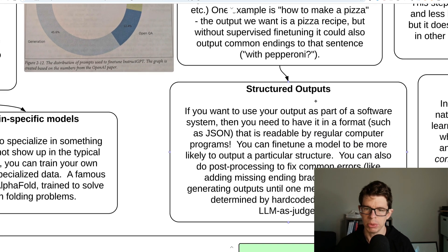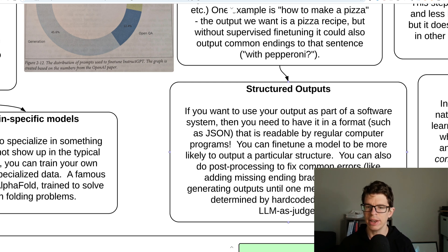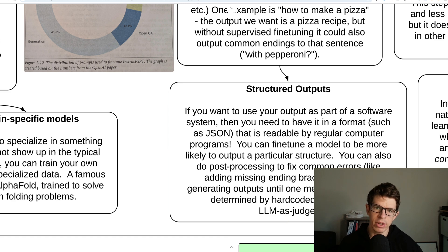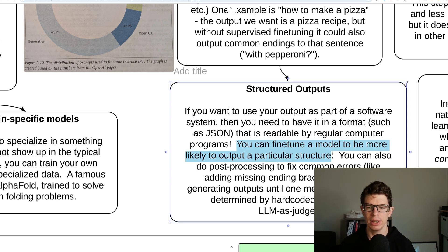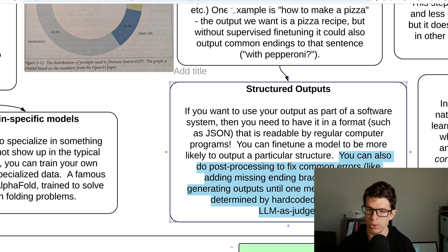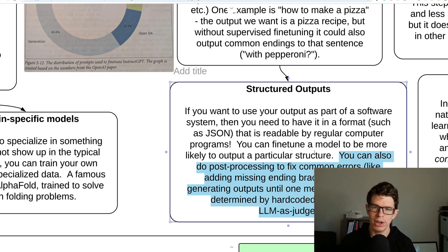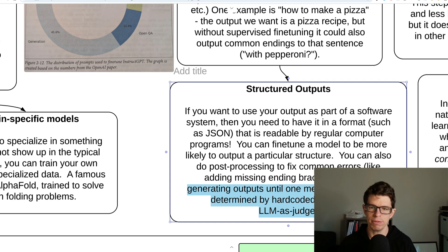Except if you want it to react like a computer — for example, JSON is something you often want your LLM to output, especially if you're using it as part of a workflow. You can train it to generate JSON and other formats readable by a computer — that is also done with supervised fine-tuning. If you have an uncommon data type, you can do your own fine-tuning to output that particular data type more accurately. As a programmer, you can also do post-processing to fix errors — if it's missing an ending bracket, just check for it and add it. Or you can keep generating output until one meets the criteria.